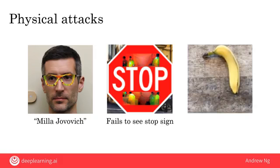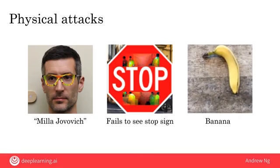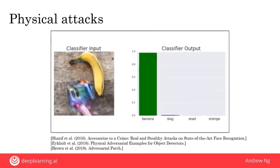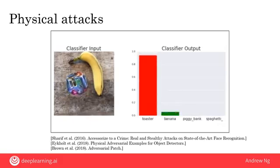One last example, from a group of researchers at Google: if you show an AI system a picture of a banana, it will correctly identify it as a banana. But the researchers designed a sticker so that if you place it into the scene, it misclassifies the banana. In the video, the classifier on the right is very confident it's a banana — but when the sticker is placed in the scene, the AI system becomes almost certain that the picture is a toaster.